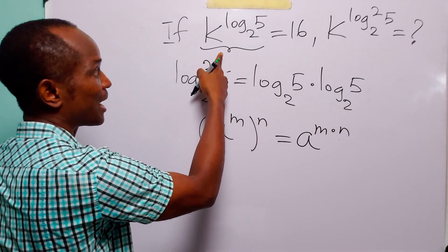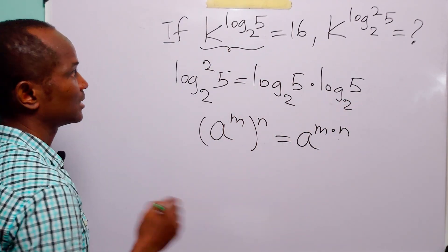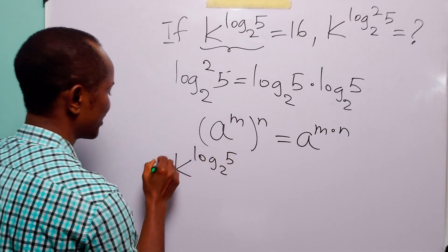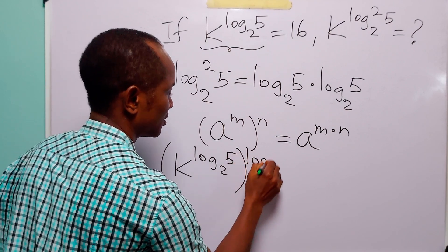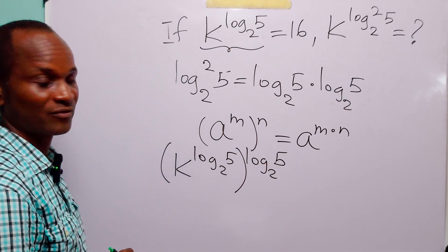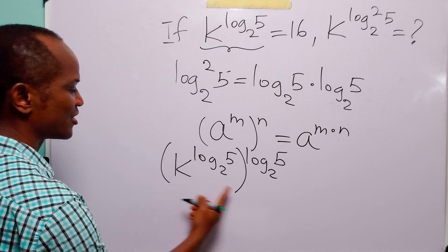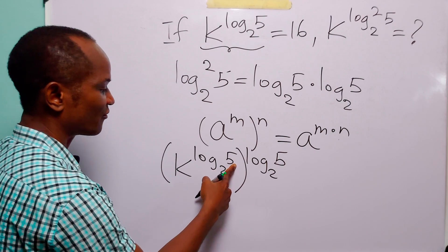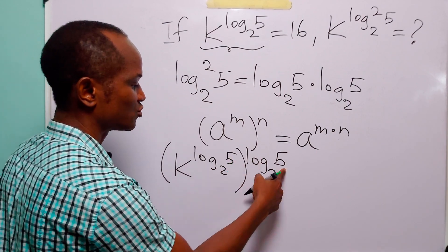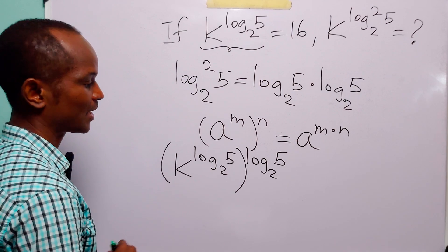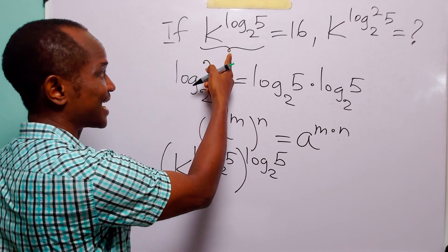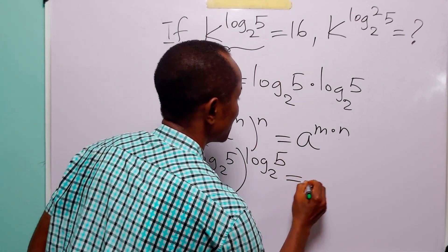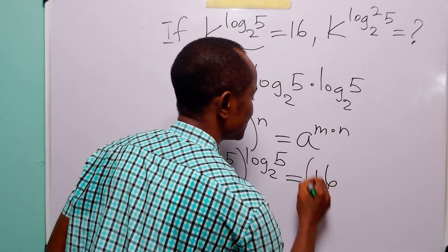So we are going to raise k^(log₂5) to the power log₂(5), giving us k^(log₂5) raised to the power log₂(5). When we expand the bracket, we get k to the power log₂(5) multiplied by log₂(5). Whatever we do to one side of an equation we must do to the other side, so the right side becomes 16 to the power log₂(5).